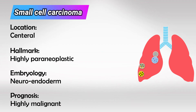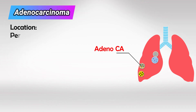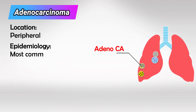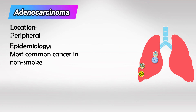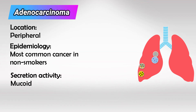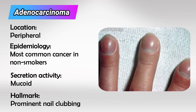Unfortunately, these cancers are malignant and very common. In the periphery, we have adenocarcinoma, which is the most common cancer in non-smokers in the lungs. These cells produce a lot of mucus, and they're also malignant. The striking feature is nail clubbing. Although all lung conditions and cancers can cause clubbing, clubbing caused by adenocarcinoma is much more prominent.